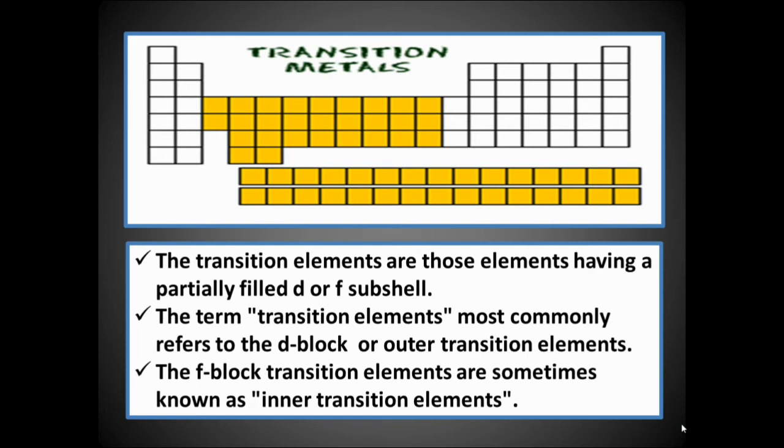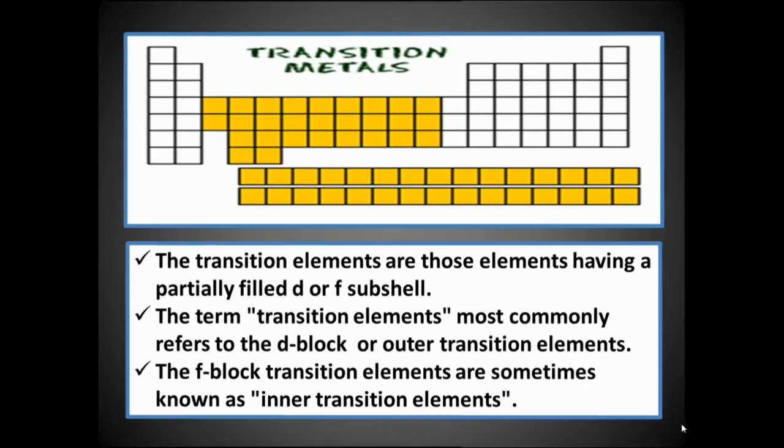Transition elements, or B group elements, are present between the 2A and 3A groups. The elements from 1B to 8B are considered the d-block or outer transition elements, whereas at the bottom, the 4f and 5f actinide and lanthanide series are considered the f-block elements or inner transition elements.